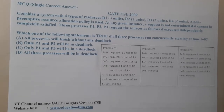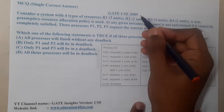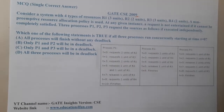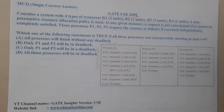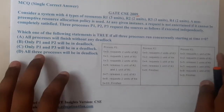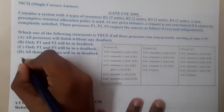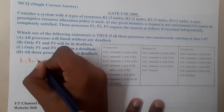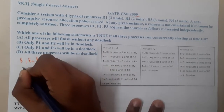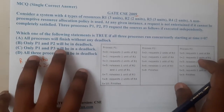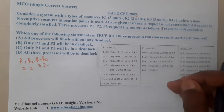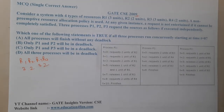Hello guys, we are back with our next lecture. This question is from GATE CSC 2009. The question considers a system with four types of resources: R1, R2, R3, and R4, each having 3 units.